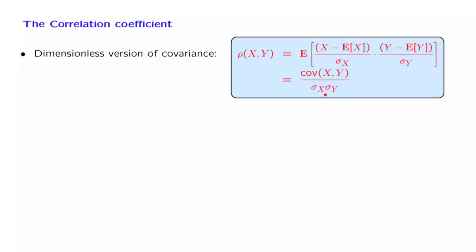A very important property of the correlation coefficient is the following: it turns out that the correlation coefficient is always between minus 1 and 1. This allows us to judge whether a certain correlation coefficient is big or not, because we now have an absolute scale, and so it does provide a measure of the degree to which two random variables are associated.